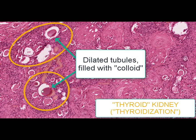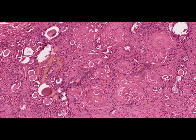The dilated renal tubules filled with colloid-like substance have an appearance similar to thyroid gland follicles. Progressing atrophy, sclerosis, and hyalinosis in all the structural elements of the kidney result in formation of pyelonephritic secondary shrunken kidney, which is the outcome of chronic pyelonephritis.